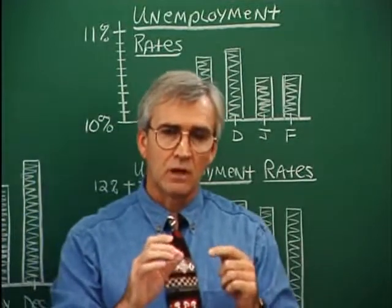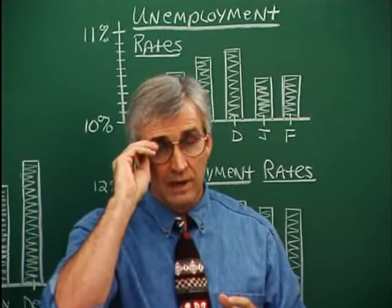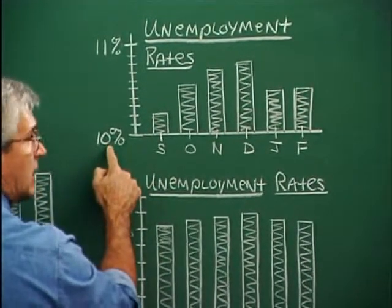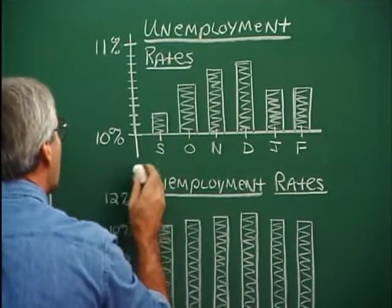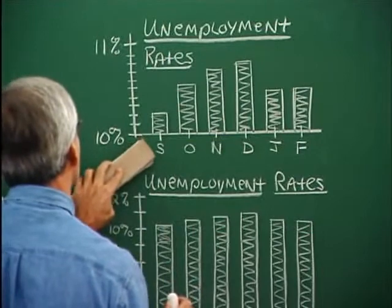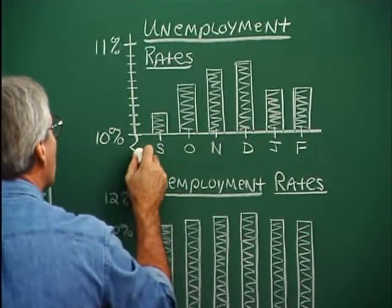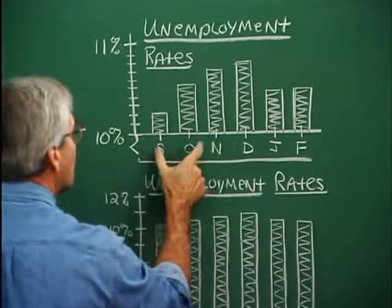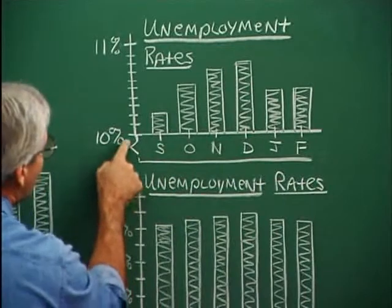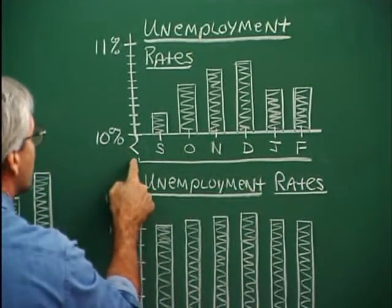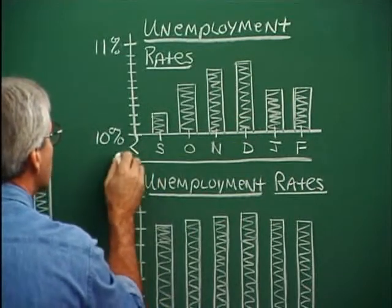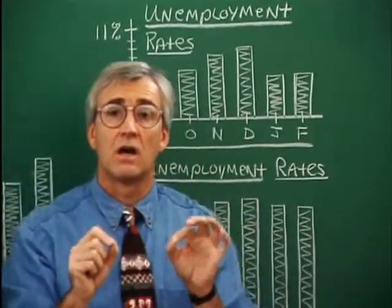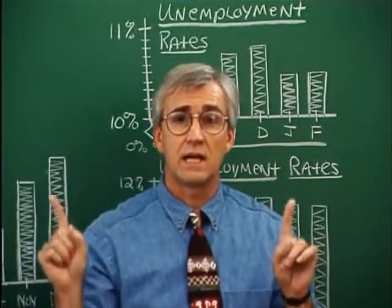Sometimes it is necessary to lop off part of a bar graph. But if that's done, an indicator needs to be used — like a little notation showing a break in the action. If we were starting at 10 percent, we should start the graph a bit lower and make a notation indicating a break from 0 percent up to 10 percent. Any time you see a break like this in either axis, a warning bell should go off — there may be a problem with this graph.